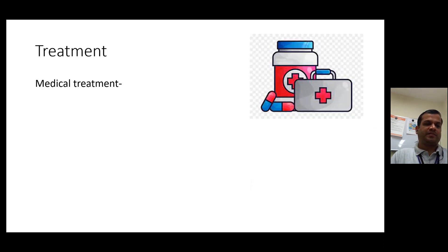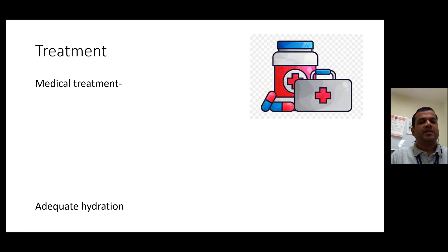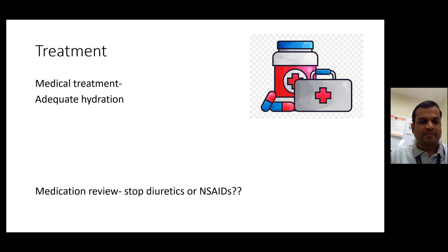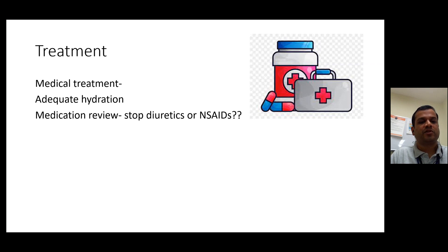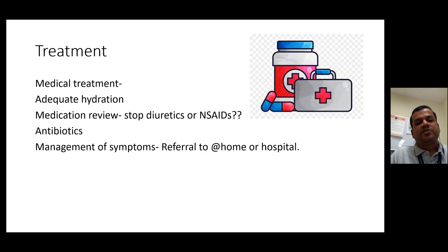Treatment — most of it is medical. When someone has a UTI, we tend to pause exercises or withdraw physiotherapy or occupational therapy treatment briefly, and management becomes more supportive. Medical management includes adequate hydration — make sure the patient is well hydrated and drinking. Medication reviews can be done — stopping some kidney tablets or certain painkillers which can adversely affect the kidneys. Antibiotics are commenced to help with the recovery process, and symptoms are managed.